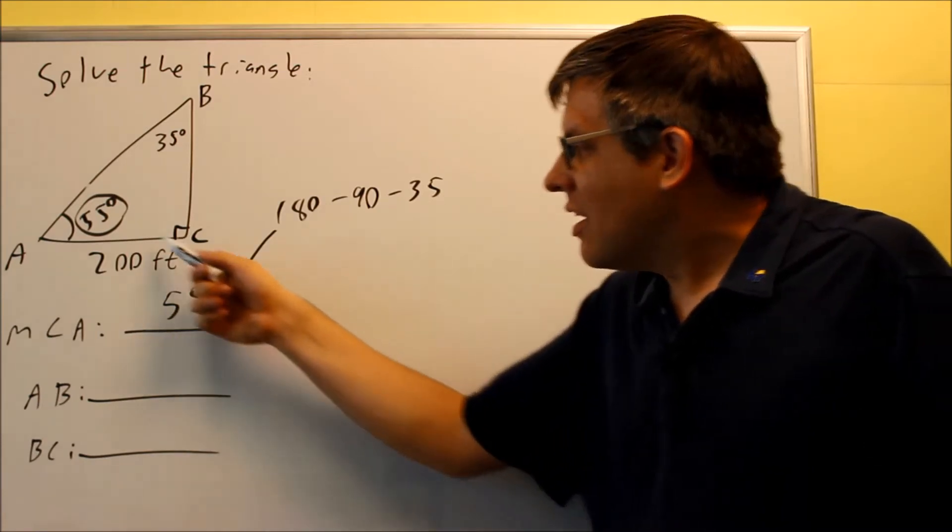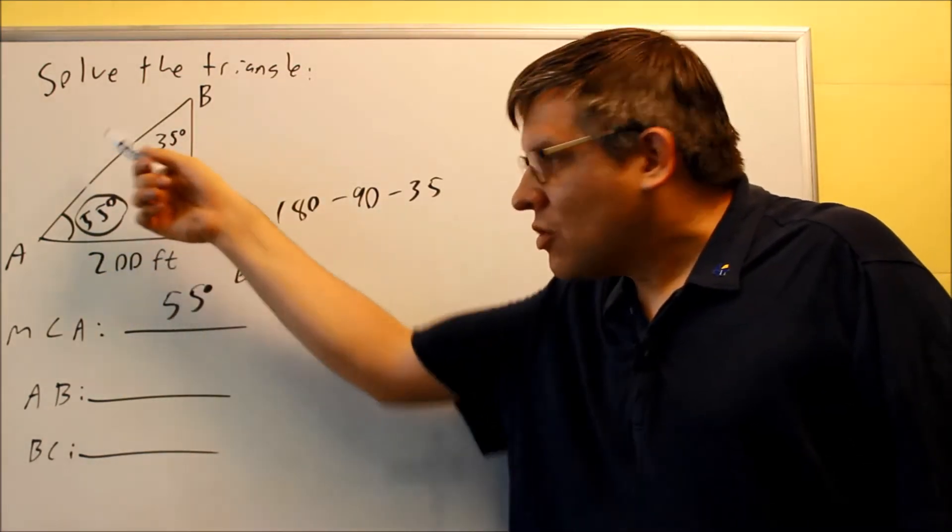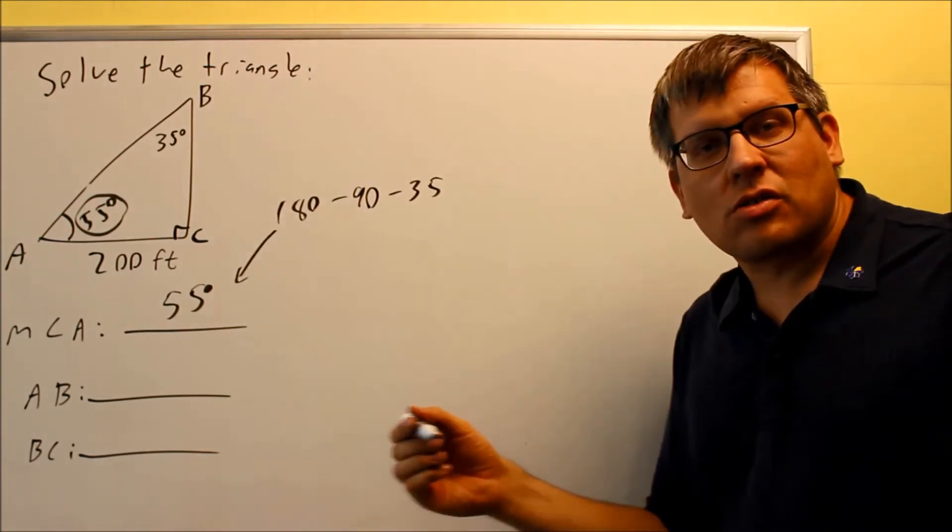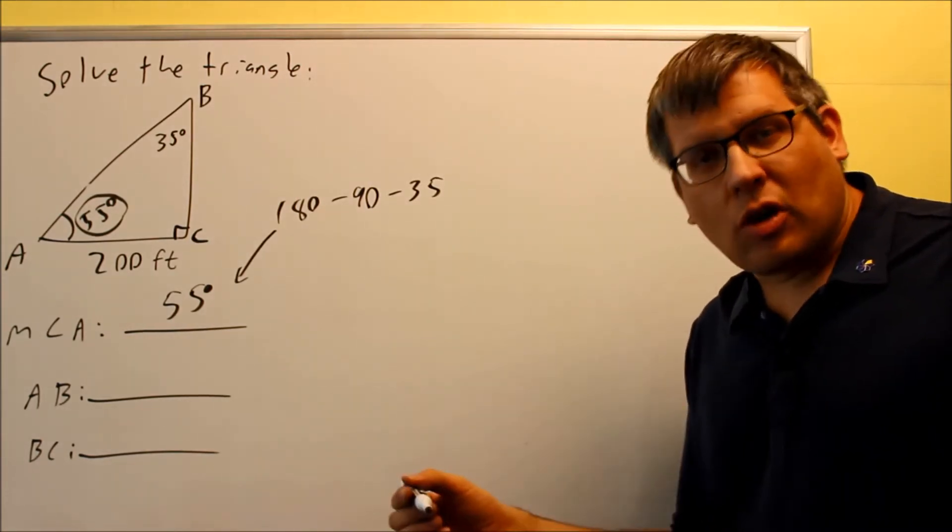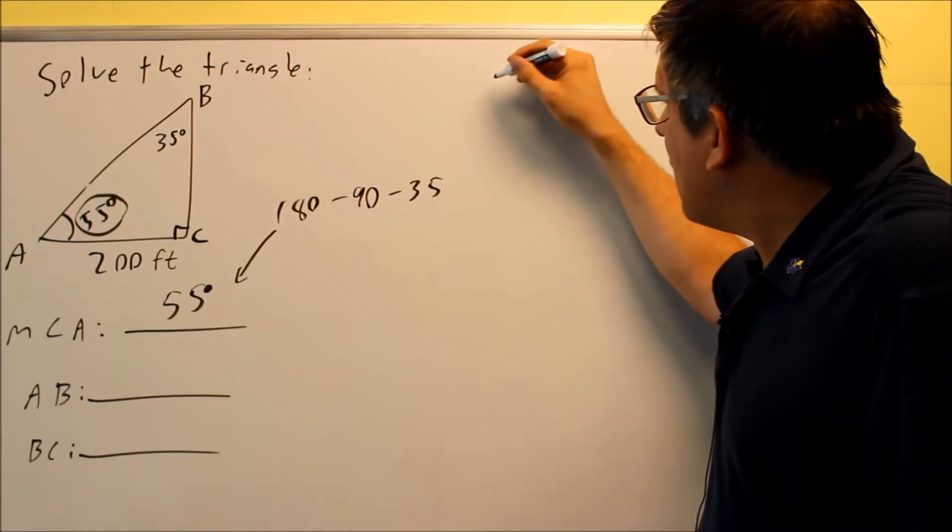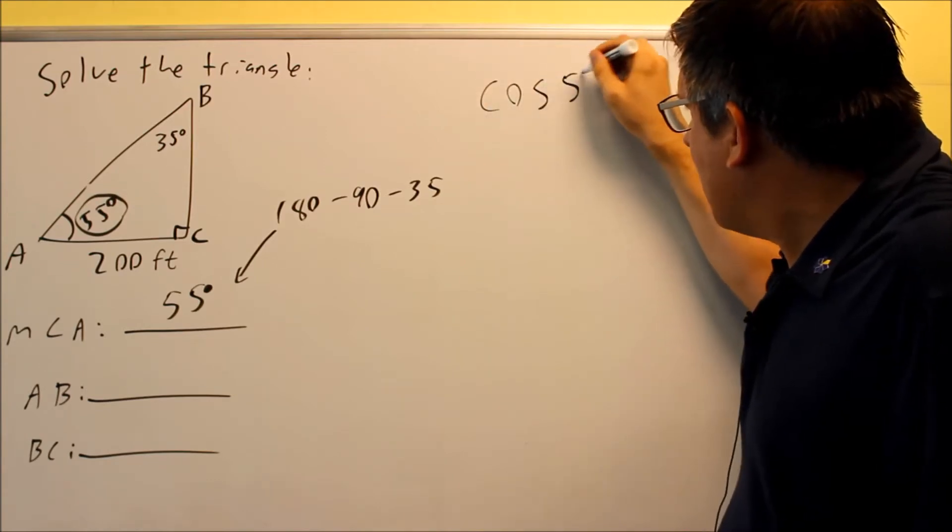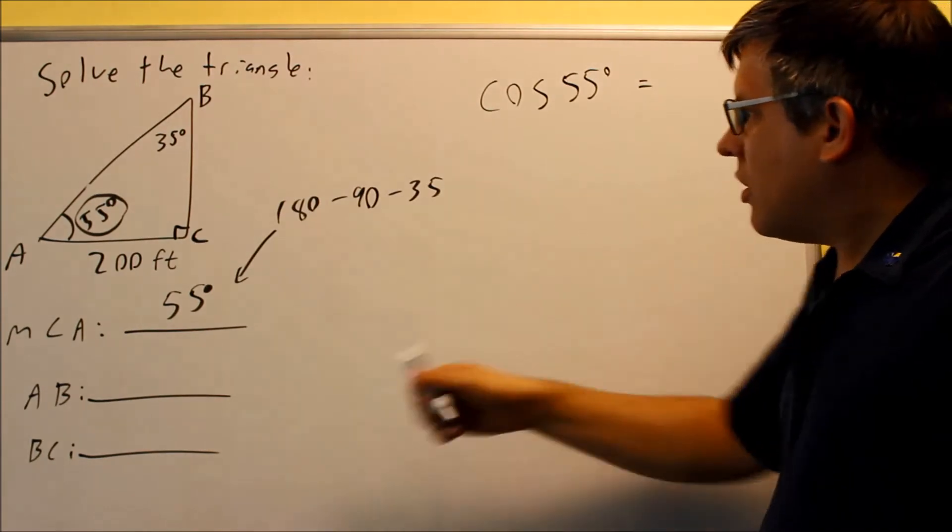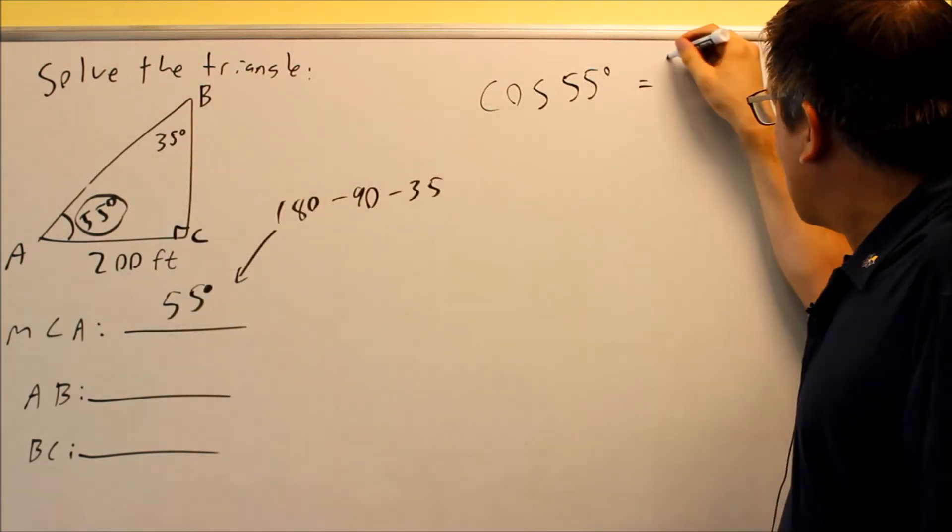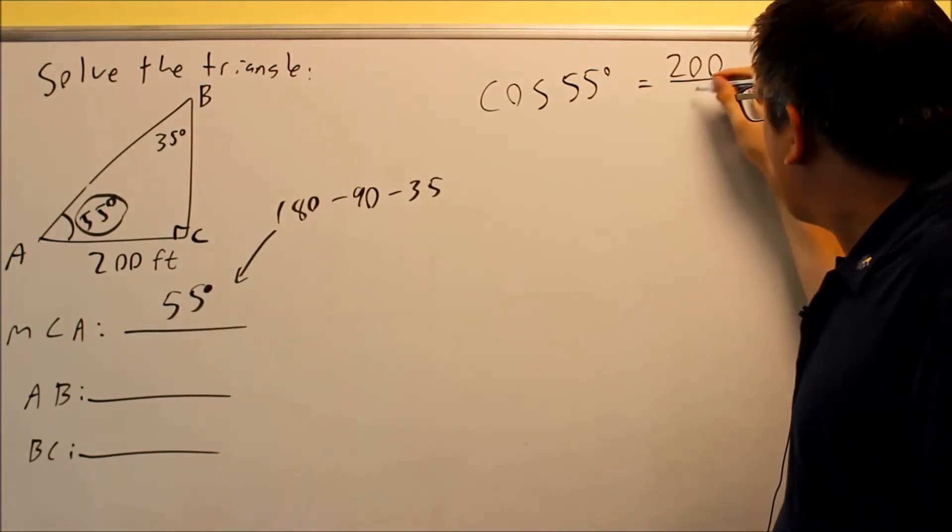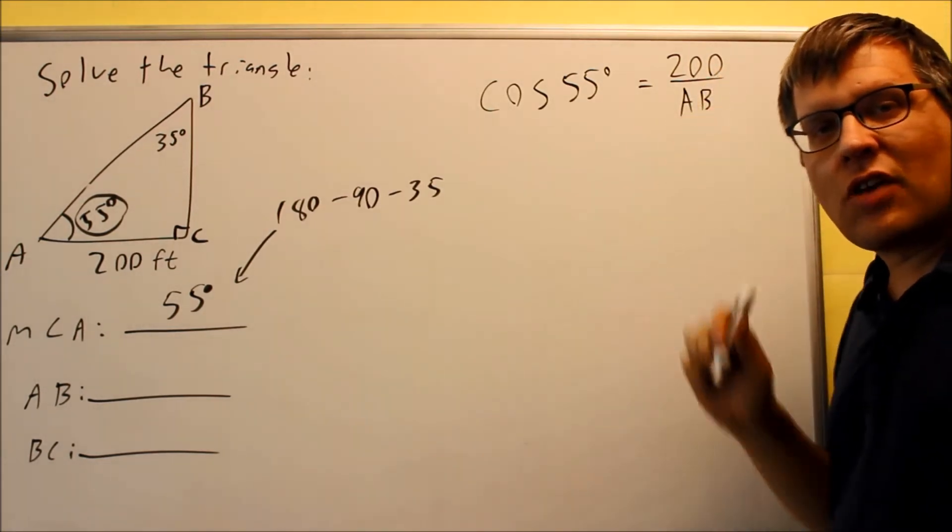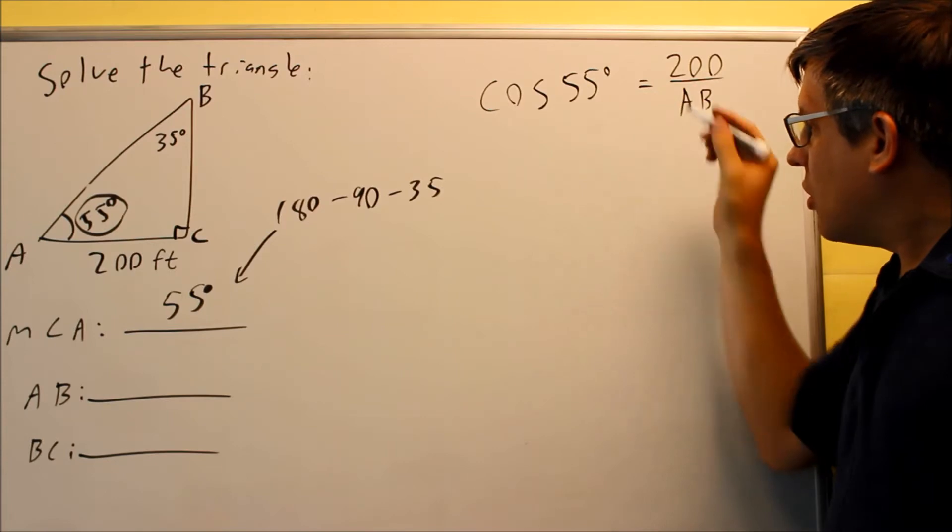I want to find a trig function that relates the adjacent side to the hypotenuse. Looking at those six trig functions, we have either secant or cosine. Because I have cosine on my calculator, that will be easier to use. So cosine 55 degrees equals the adjacent over the hypotenuse. In this case it's 200 over AB. This is the definition that we want to set up and use.